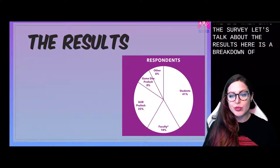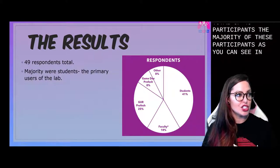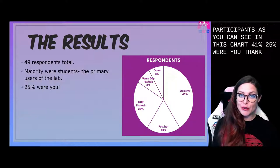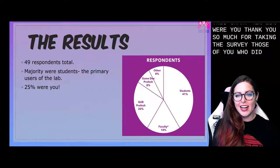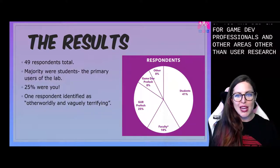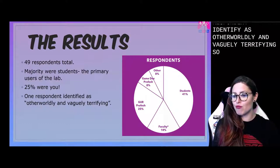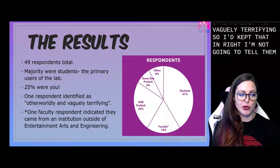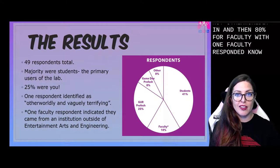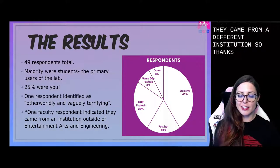Here's a breakdown of who responded. I had a total of 49 participants. The majority — 41% — were students. 25% were you all; thank you so much for taking the survey. 8% were game dev professionals in areas other than user research, and 8% were other. I had one respondent identify as 'otherworldly and vaguely terrifying,' so I kept that in — I'm not going to tell them they're not. And then 18% were faculty, with one faculty respondent noting they were not employed by the University of Utah but came from a different institution.